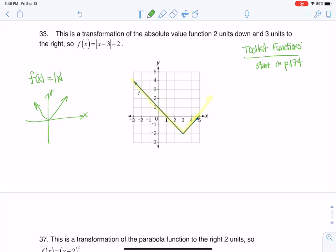Let's see how this was transformed. On the original absolute value toolkit function, we might call that a vertex—it's not technically a parabola, but let's say that vertex is at (0,0). Well here, you can see that vertex is at (3,-2).